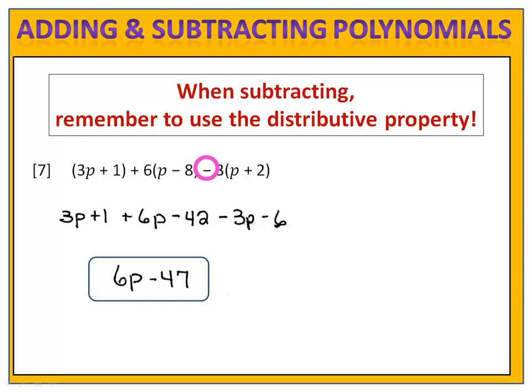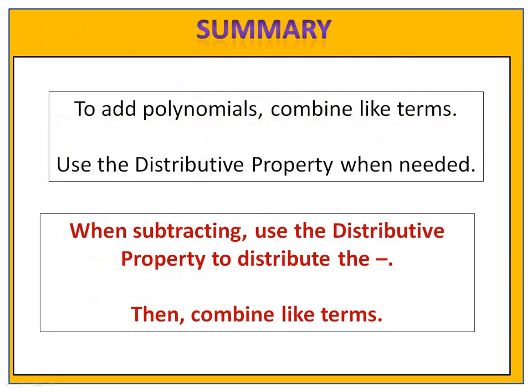So here's what you need to know. When you're adding or subtracting polynomials, combine like terms. Keep your eyes open — sometimes you need to use the distributive property. When you're subtracting, you always have to use the distributive property to distribute the minus as a negative. Once you've done that, you can combine like terms. This is everything you need to know to get started with addition and subtraction of polynomials.